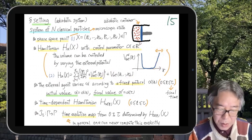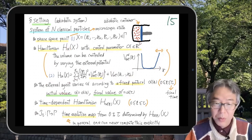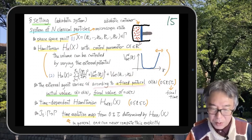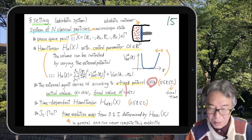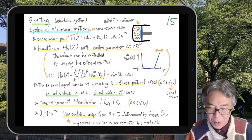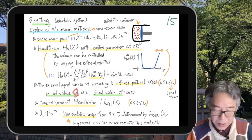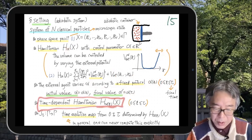We have a Hamiltonian with a controllable parameter. An external agent varies α according to a fixed protocol — a fixed function of time t, where t runs from zero to τ. This tells you how you want to move the piston. You decide how you're going to move the piston before you perform the experiment, fix your function, and then when the experiment starts, you change α exactly according to this protocol. I denote by α the initial value and α′ the final value of this parameter.